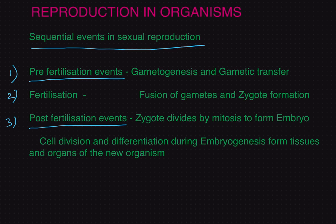Before fertilization, there is the formation of gametes, called gametogenesis, and the transfer of these gametes for gametic fusion. The next event is fertilization — that is, the actual fusion of gametes. We know that gametes are haploid in nature.